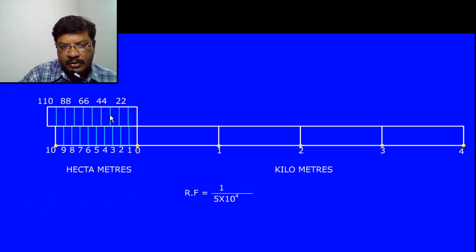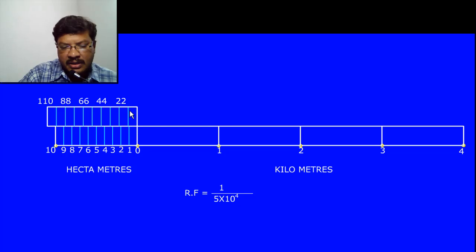The Vernier scale divisions are: 11, 22, 33, 44, 55, 66, 77, 88, 99, and 110 decameters. The distance on the Vernier scale per division is 11 decameters, while on the main scale it is 10 decameters. The difference is 1 decameter. In the same way, you get 2 decameters, 3 decameters, and so on.